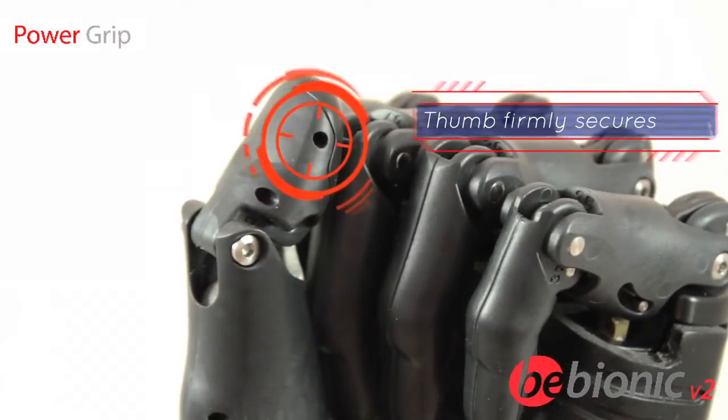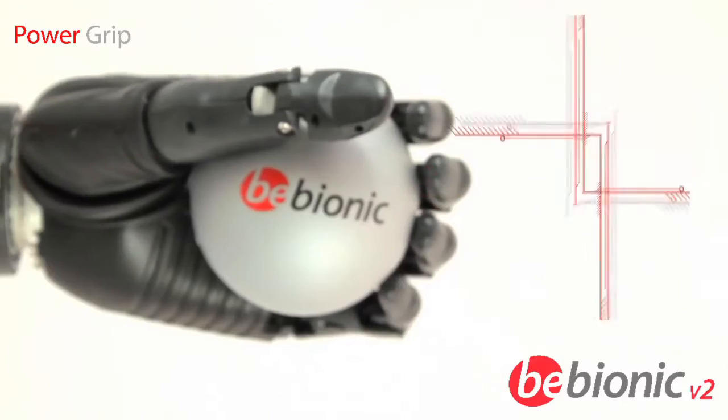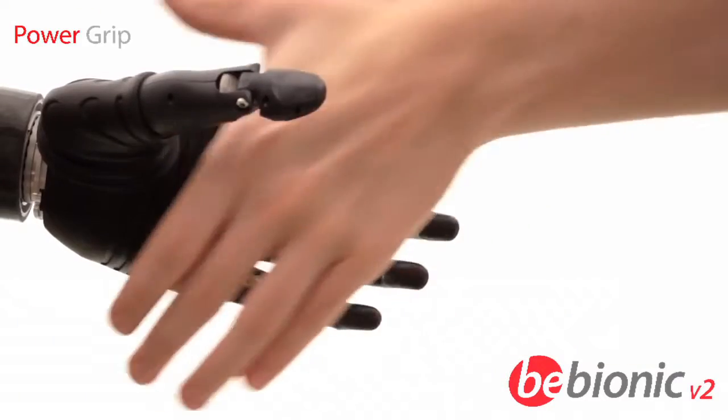In power grip, all four fingers close with the thumb providing additional grip security. This allows spherical and cylindrical objects to be held securely and also provides a handshake.